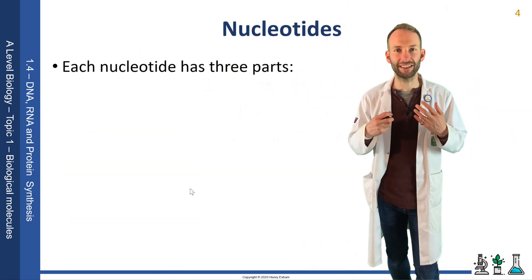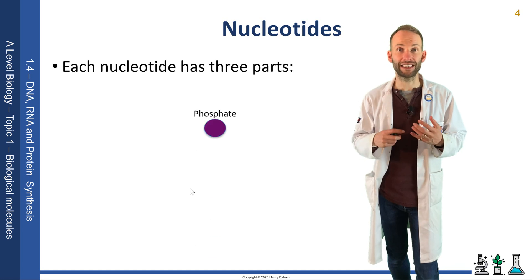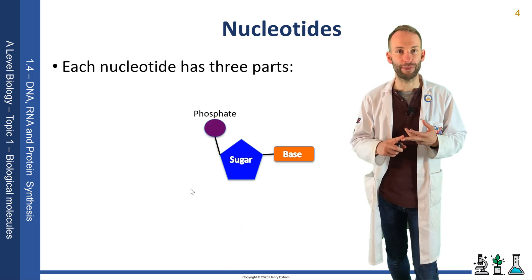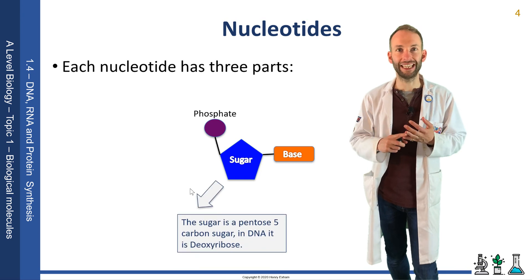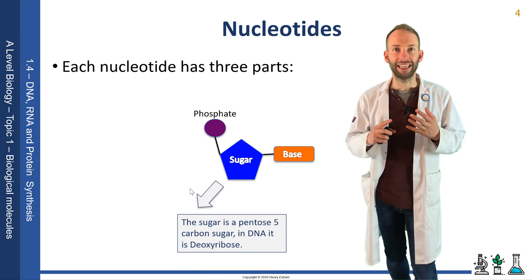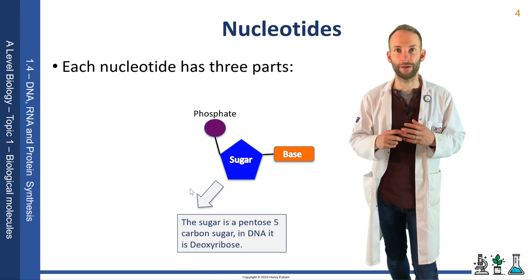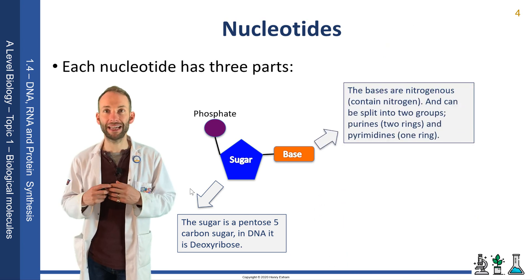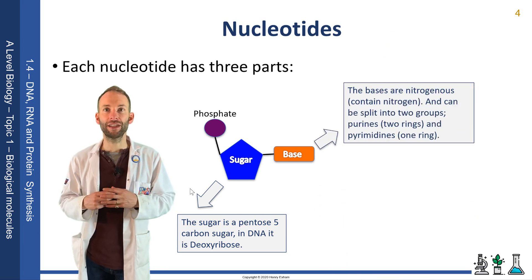So what nucleotides make DNA? All nucleotides have three components: phosphate, sugar, and a base. The sugar in DNA is deoxyribose — it's a pentose sugar. The base is a nitrogenous base, which means it contains nitrogen.